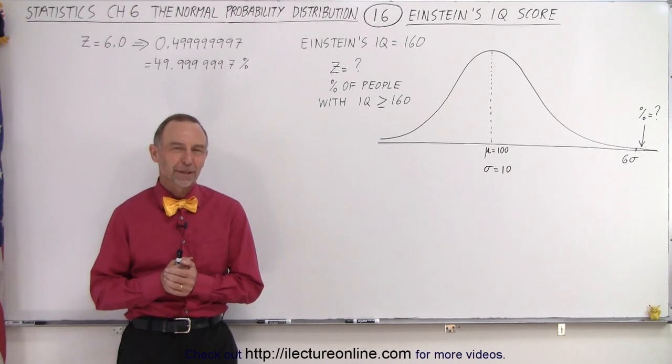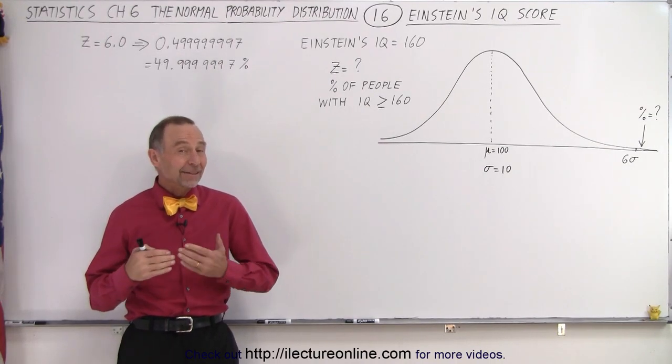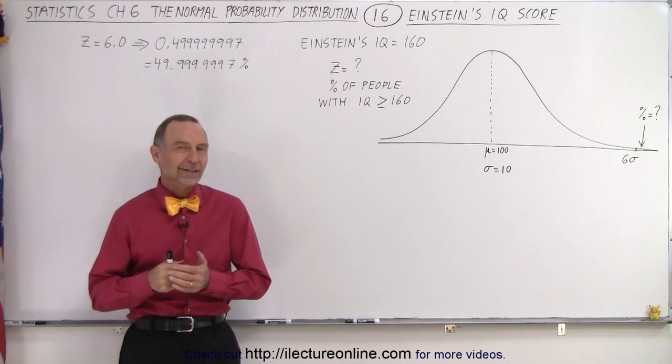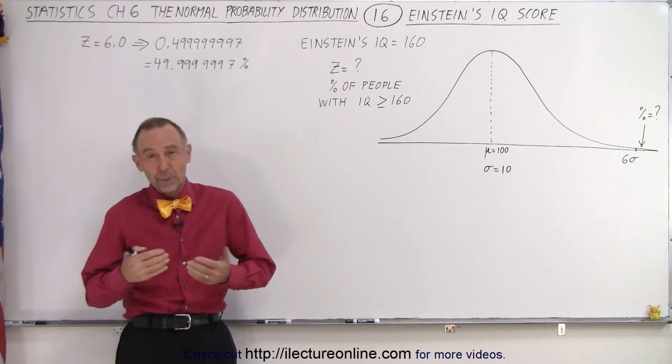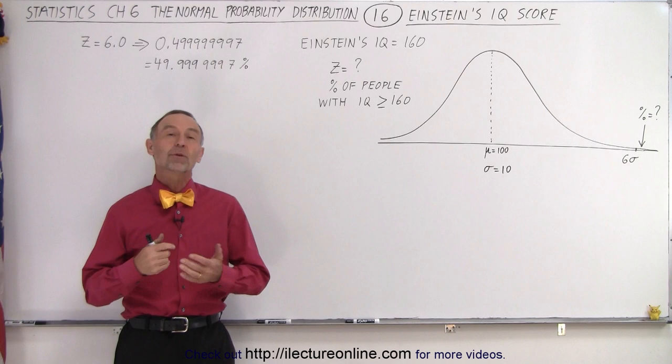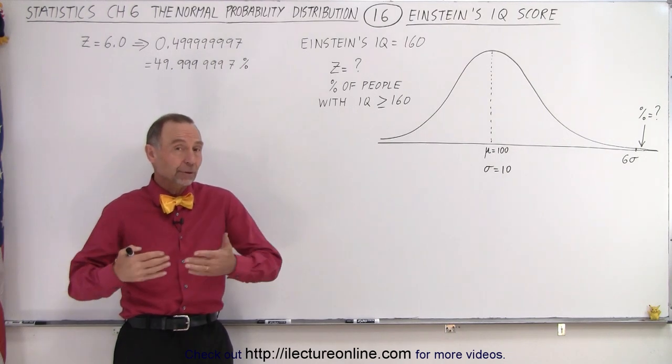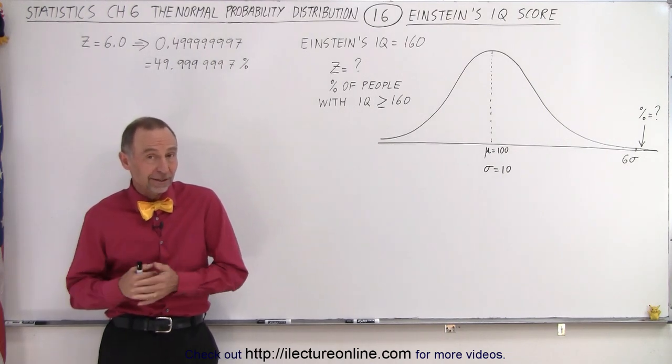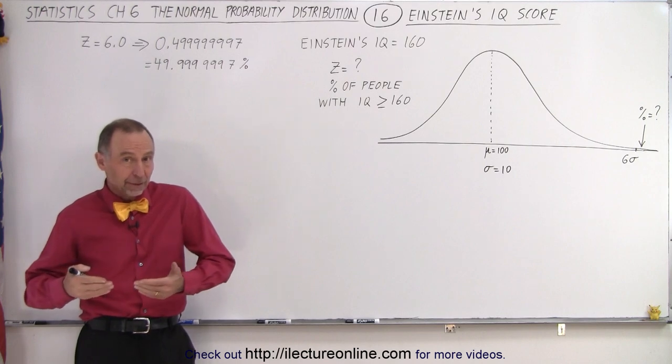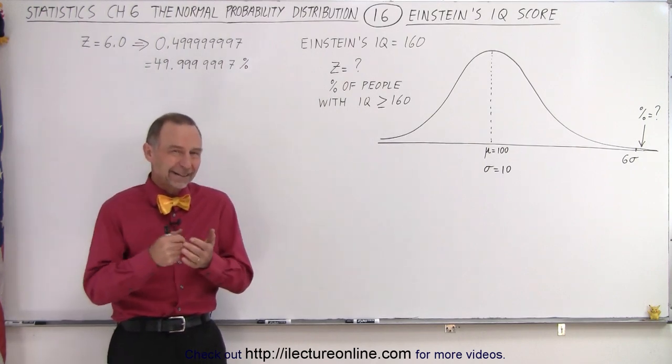Welcome to ElectronLine. So it was said that Einstein had an IQ of 160. Now we may wonder, how unusual is that? How many people are there in the world that have an IQ of 160 or above? There's people that have been known to have an IQ even higher than that.